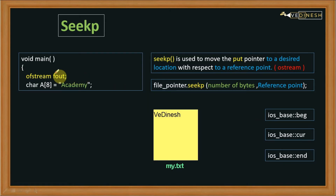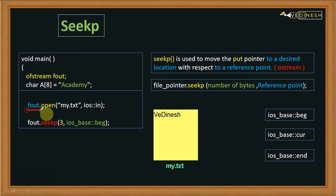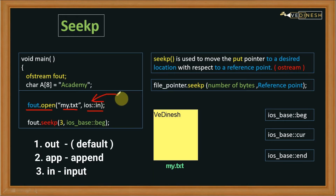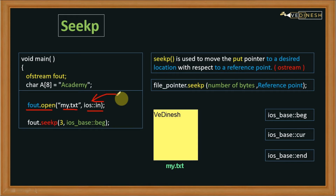Here we have an fout object of class ofstream, because we are writing data. We have created a character array storing 'Academy'. After that, we open the file 'my.txt' in input mode. The first mode was output mode, second was append mode, and third is this input mode. We use input mode when writing data into the file.